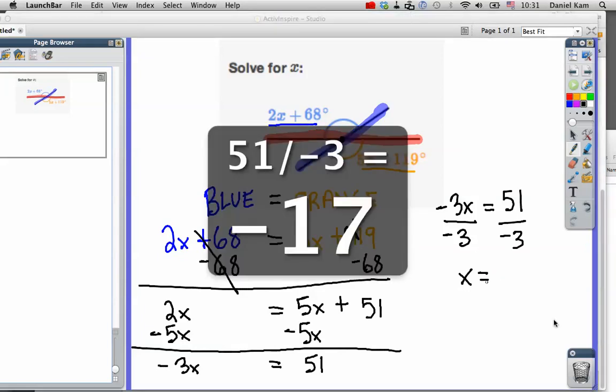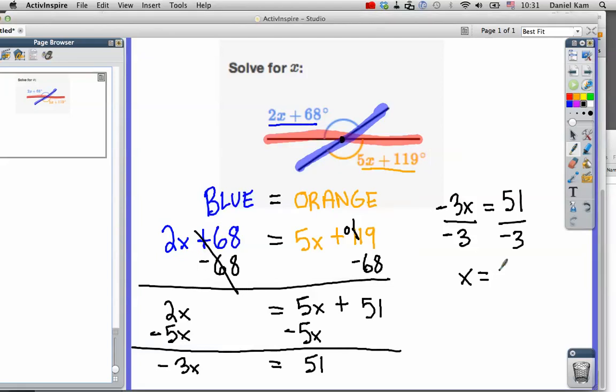It's going to equal negative 17. So x equals negative 17. And that is how you solve for x when you need to find vertical angles.